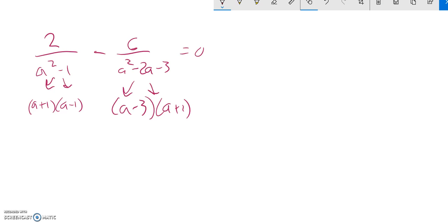And so now, if I look at this, my common denominator, they both already have an a plus 1 in them. So my common denominator is a plus 1 times a minus 1 times a minus 3. Notice that that's all I need, I don't need the a plus 1 in there twice.